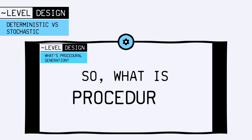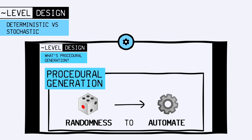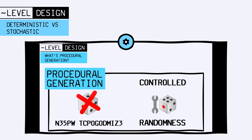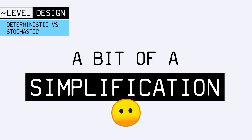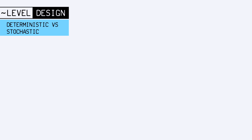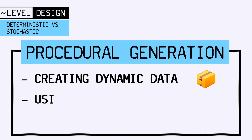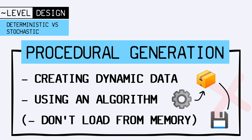In our previous episode about procedural generation, we discussed how this concept was about using controlled randomness to create data on the fly at runtime. This was actually a bit of a simplification. In truth, procedural generation is just about making data dynamically from an algorithm, rather than loading it from memory.